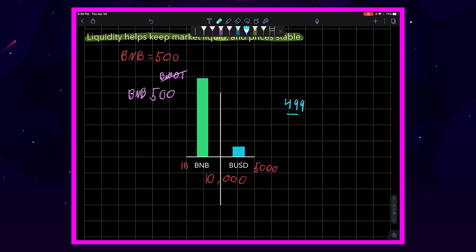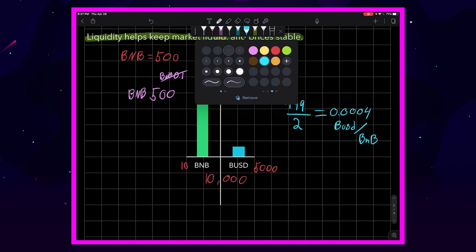If we put through 499 out of our 500 BNB and let's say we had 2 BUSD left in the pool, it would come out to be 0.0004 BUSD per BNB in the pool.